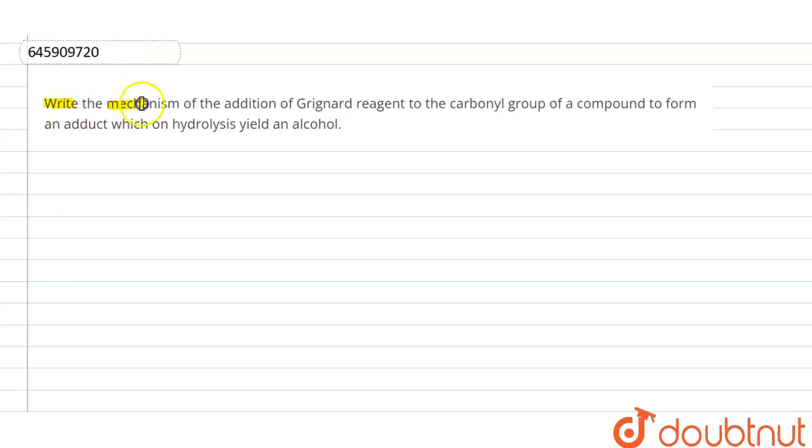Write the mechanism of the addition of Grignard reagent to the carbonyl group of a compound to form an addition adduct which on hydrolysis gives the alcohol. By hydrolysis we can get alcohol, that we have to discuss.